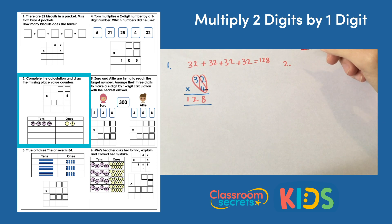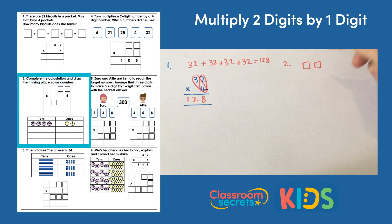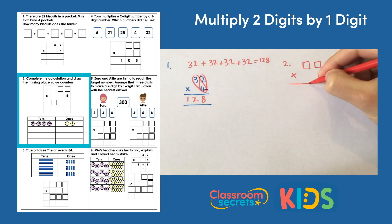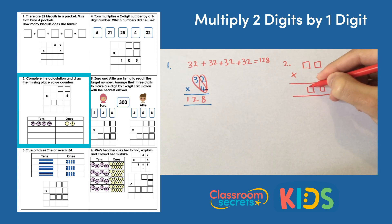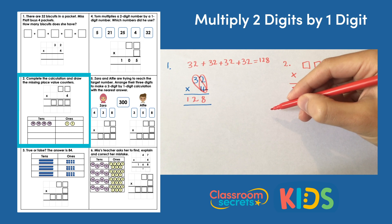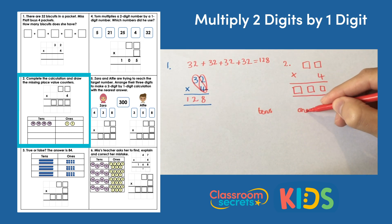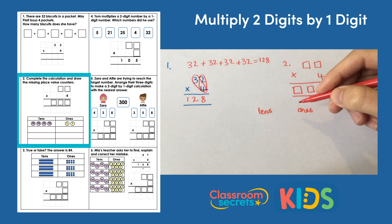Number two asks us to complete the calculation and draw the missing place value counters. We have a missing number in the calculation. We're given the number four — that's what we're multiplying by — and then we have three empty boxes in the answer: one in the ones, one in the tens, and one in the hundreds. Below we've been given some counters with tens and ones, and this is where you'll get your numbers from.